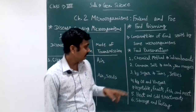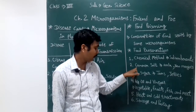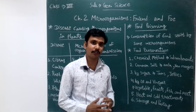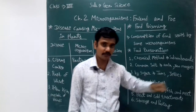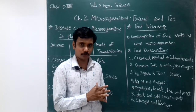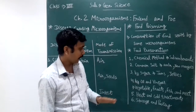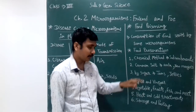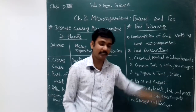Some examples of chemical preservatives are sodium benzoate and sodium metabisulphite, which prevent our food from spoiling. Number two is preservation by common salt. For example, amla and raw mangoes — if we add salt to raw mangoes, they will not spoil.